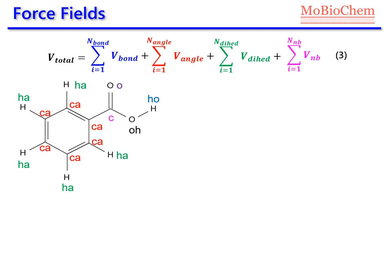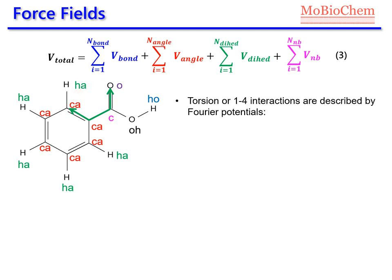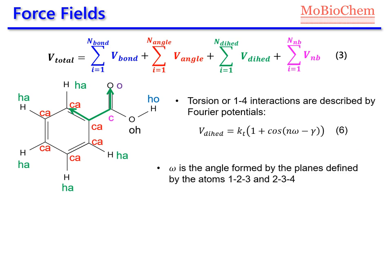Now let's focus on the third term in the equation: the torsion or dihedral potential. This potential energy term represents the energy between atoms which are separated by three bonds, for example this oxygen and this carbon atom. For this kind of interaction, we usually use the Fourier equation — equation number six — where ω is the dihedral angle formed by the plane defined by atoms 1, 2, 3 and the plane defined by atoms 2, 3, 4.